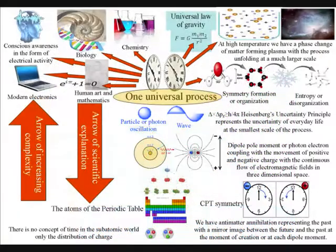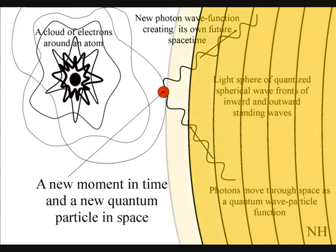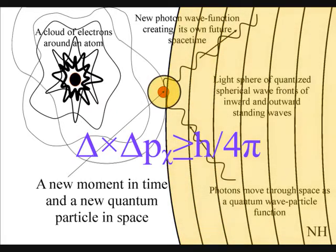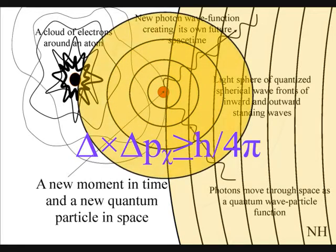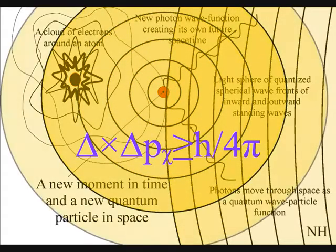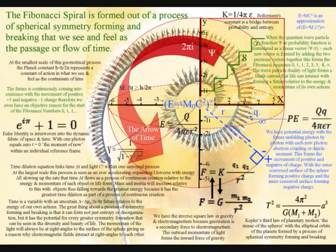But what kind of process could form the complexity and diversity of life? There is only one process that can form entropy or disorganization with a built-in potential for ever greater complexity and diversity, and that is a process of spherical symmetry forming and breaking.